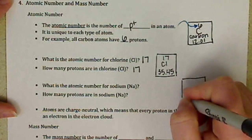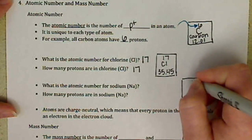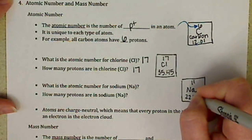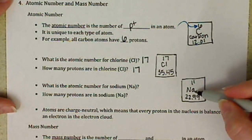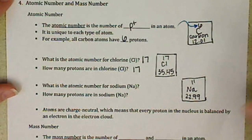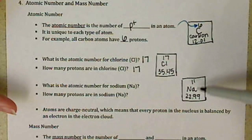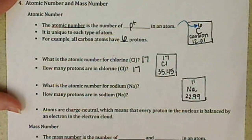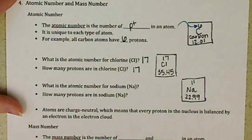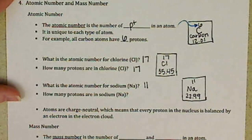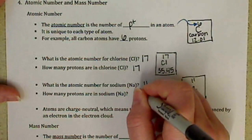We look at sodium. Sodium is one of those elements that's named after, it's given a symbol after its non-English name. So sodium is Na. What's the atomic number for sodium? Sodium is 11. And how many protons in sodium? 11.